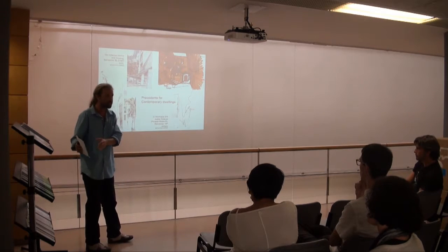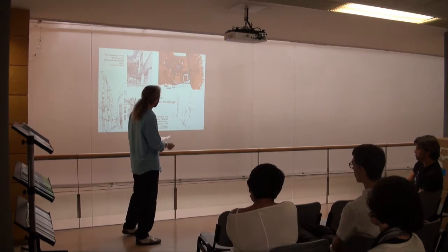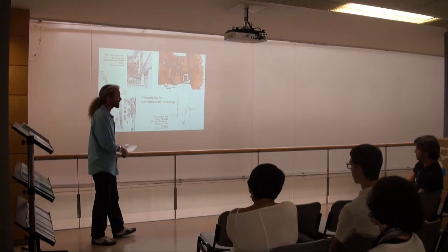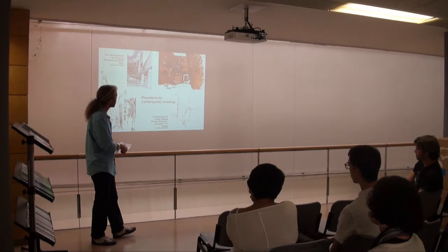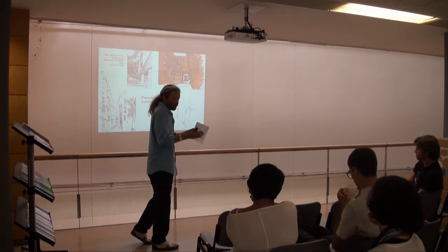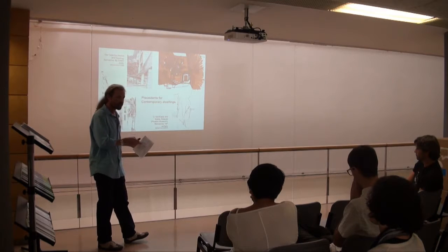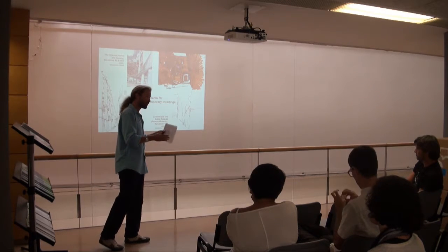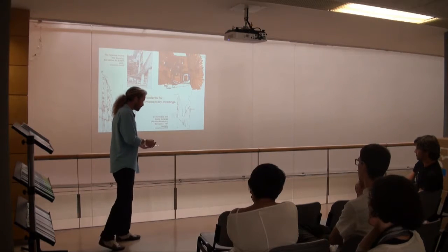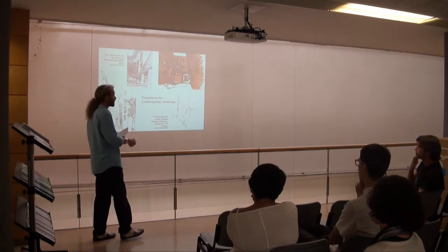If we then look at the Carrer Montcada towards the Palau del Baró de Castellet — this is the Gothic palace — you have a similar arrangement. Very narrow streets, very tight, very dark, balanced by a really quite generous semi-public, semi-private courtyard of the Gothic palace by the exchange house. So an example of contemporary dwellings using ideas of the palace.